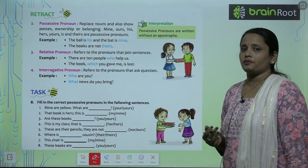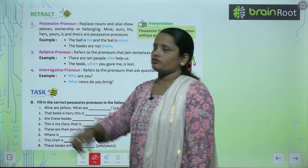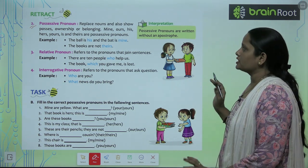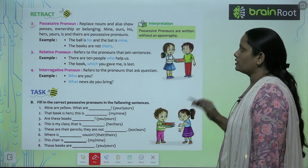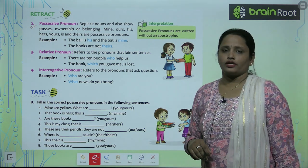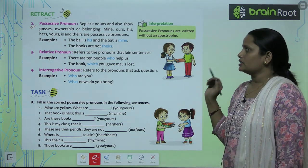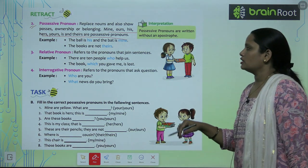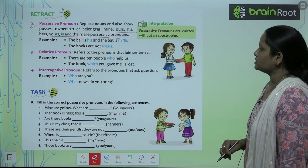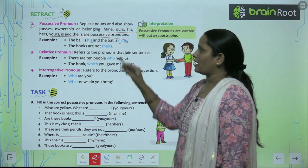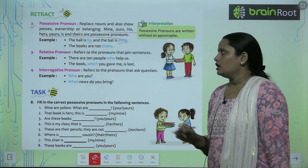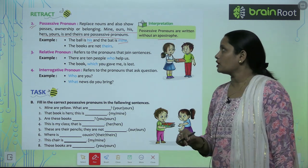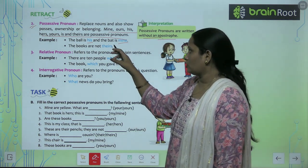After learning about personal pronouns, let's move on to possessive pronouns. Possessive means something belonging to somebody. Possessive pronouns replace nouns and also show ownership or belonging. Mine, ours, his, hers, yours, its, and theirs are possessive pronouns. Example: The ball is his and the bat is mine. The books are not theirs. Note: possessive pronouns are written without an apostrophe.